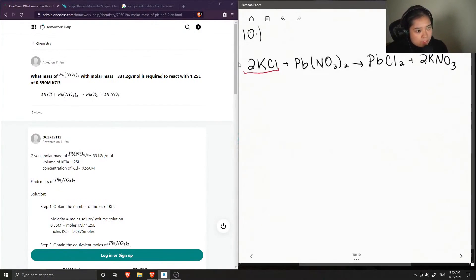So our potassium chloride solution had a volume of 1.25 liters and a concentration of 0.55 moles per liter. And we also know that our lead nitrate has a molar mass equal to 331.2 grams per mole. And we're trying to find its mass.